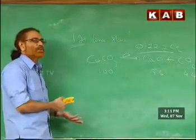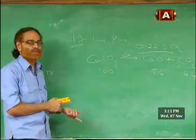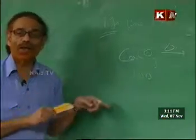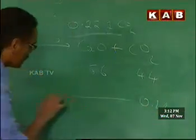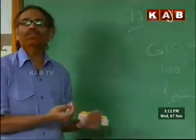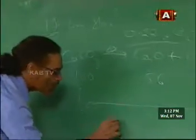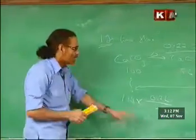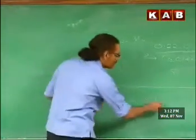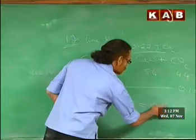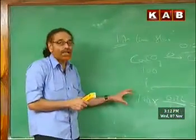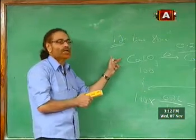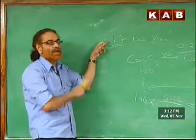So in grams, 100 grams of calcium carbonate produces 44 grams of carbon dioxide. I obtained 0.22 grams of carbon dioxide. Using this proportion: 44 grams of CO₂ comes from 100 grams of calcium carbonate, so 0.22 grams of CO₂ corresponds to 0.5 grams of calcium carbonate. That means in the 1 gram of limestone taken, approximately 0.5 grams is calcium carbonate.